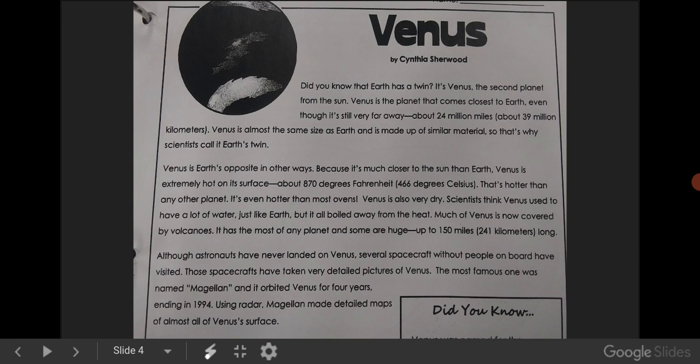Although astronauts have never landed on Venus, several spacecraft without people on board have visited. Those spacecrafts have taken very detailed pictures of Venus. The most famous one was named Magellan and had orbited Venus for four years, ending in 1994. Using radar, Magellan made detailed maps of almost all of Venus's surface.